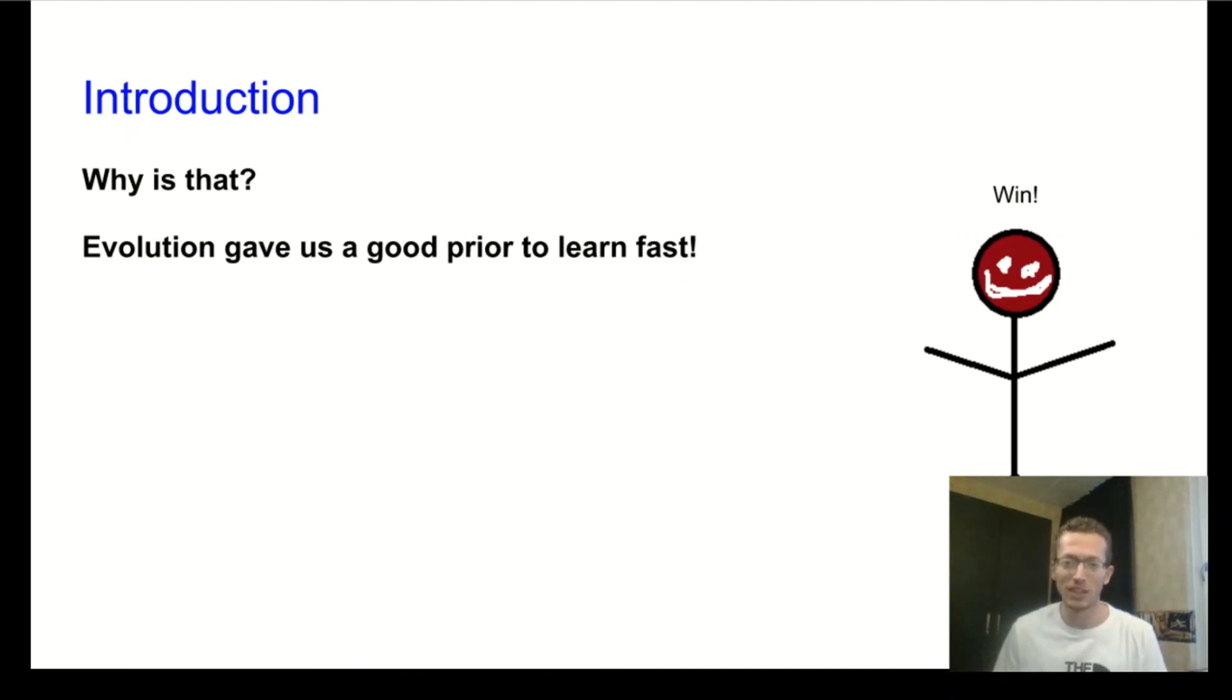So what evolution actually did is it gave us a good prior to learn fast. We have some kind of structured knowledge in our brain already from birth that allows us to learn new tasks, to acquire new skills very quickly.